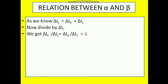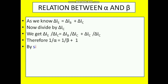Now we substitute the values. We know del IE upon del IC is 1 upon alpha, del IB upon del IC is 1 upon beta, and del IC upon del IC is 1. By simplifying, I get the value of beta, which is alpha upon 1 minus alpha.